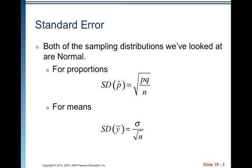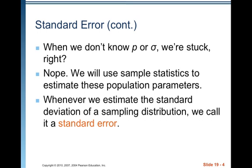Both of the sampling distributions we've looked at are normal. For proportions, the standard deviation of p-hat is the square root of pq over n, and for means, the standard deviation for y-bar is equal to sigma over the square root of n. When we don't know p or sigma, we're stuck, right? Nope — we will use the sample statistics to estimate these population parameters.